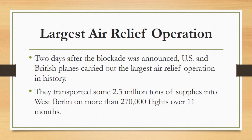Largest Air Relief Operation: Beginning June 26, 1948, two days after the blockade was announced, US and British planes carried out the largest air relief operation in history, transporting some 2.3 million tons of supplies into West Berlin on more than 270,000 flights over 11 months.